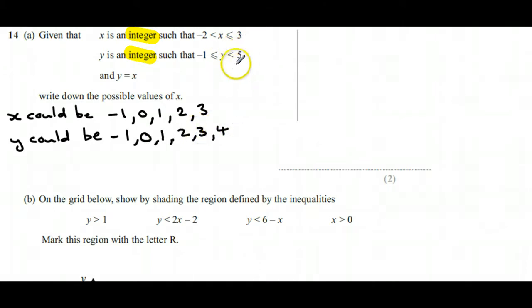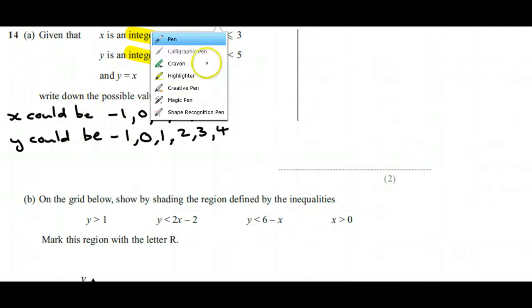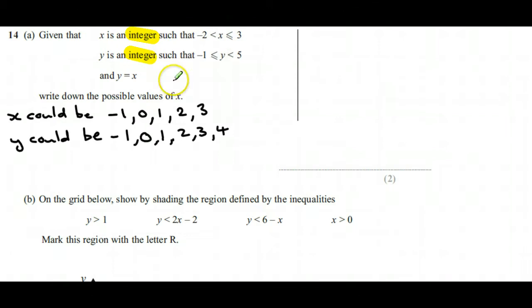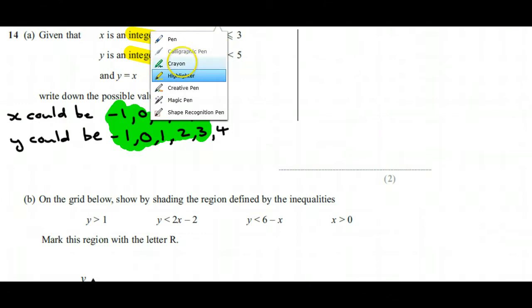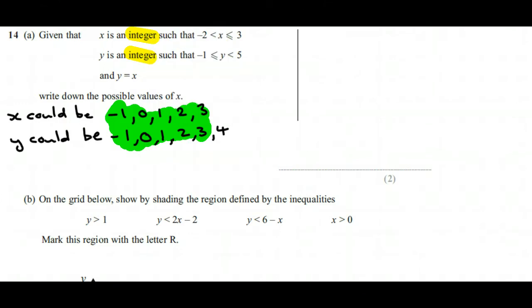So that means if x and y have got to be equal, then the ones we can use are the ones that they have in common. Therefore, our final answer will be written like this: -1, 0, 1, 2, and 3.